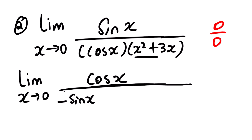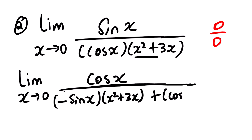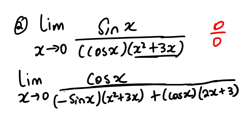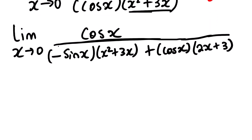Plus the derivative: we rewrite the first function and then find the derivative of the second function, which is 2x plus 3. From here, when we simplify, we have the resulting expression.